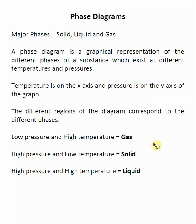A phase diagram is a graphical representation of the different phases of a substance which exist at different temperatures and pressures. Overall, it allows us to determine what the expected phase of a substance is if given a temperature or a pressure.